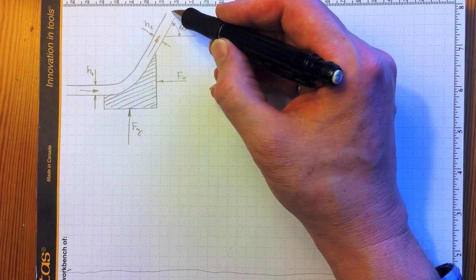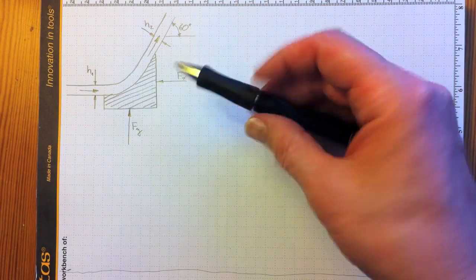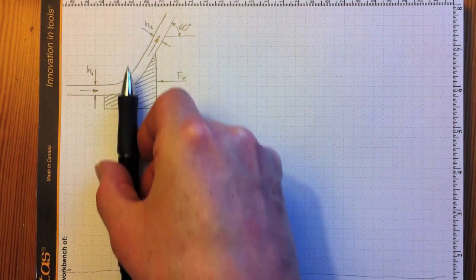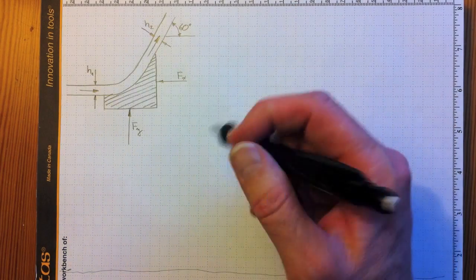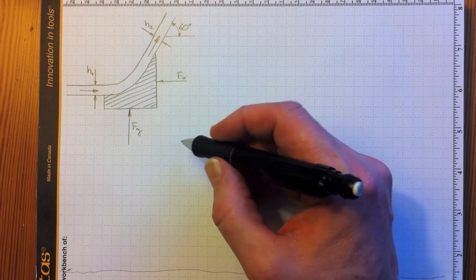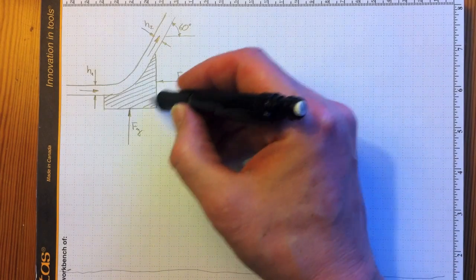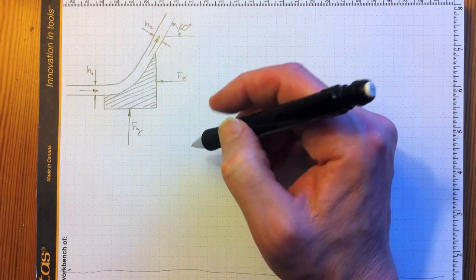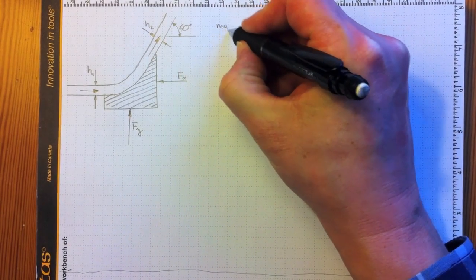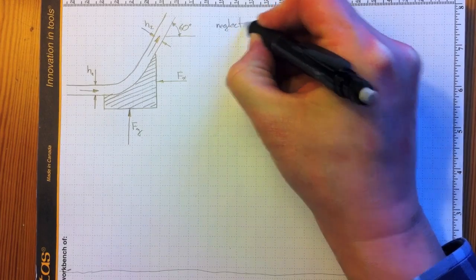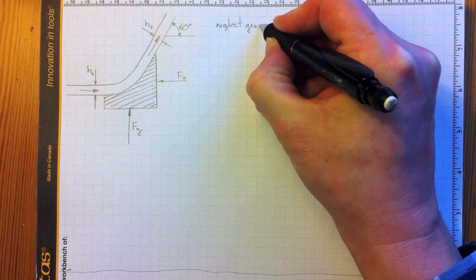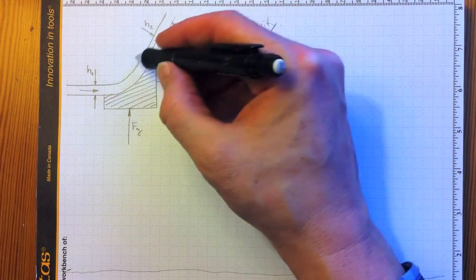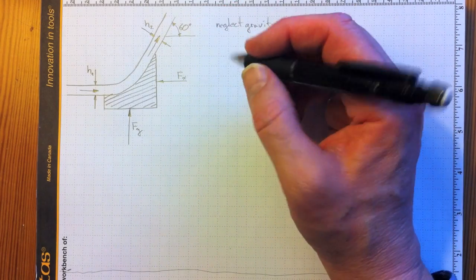So we know just from examination and our experience that this is going to require a force in this direction to hold the block still and another force in this direction to hold the block still. So if the block's going to remain stationary, we can do a momentum balance and find out the forces involved by the acceleration of the fluid because nothing else is going on. So we'll neglect gravity, meaning this is either on a horizontal surface or the velocities are so large compared to the heights involved that gravity doesn't have an effect.